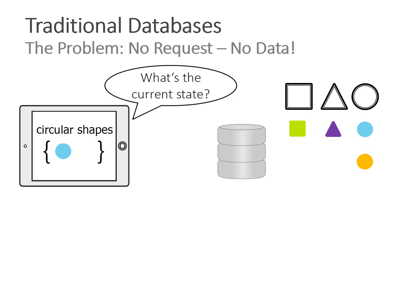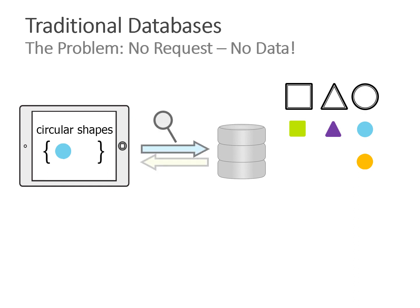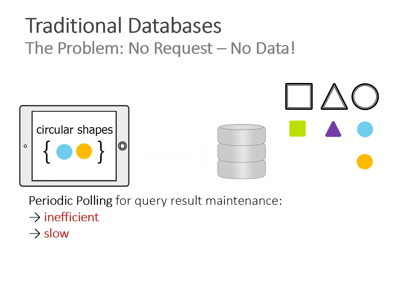The application has to explicitly ask the database for the current state, and when it does, it gets the state in a very inefficient and slow way — everything is sent from the database to the application even if part of the state, like the blue bubble, is already known at the client. And if the application only polls once a minute, you have a one-minute staleness window.